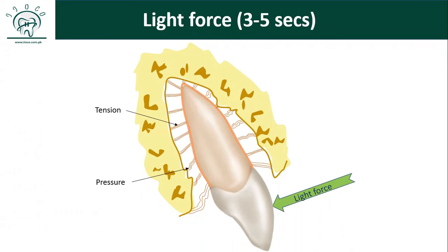From here, there are two kinds of biological reactions depending on the magnitude of force. If light force is applied, the reaction is different from heavy force. Light force is defined as force that does not completely occlude the blood vessels in the pressure area. Heavy force is force that completely occludes the blood vessels in the pressure area. If light force is applied for three to five seconds, blood vessels will be compressed in the pressure area and dilated in the tension area.